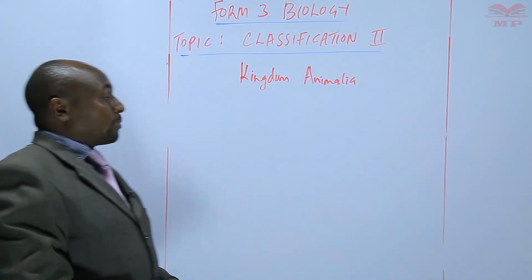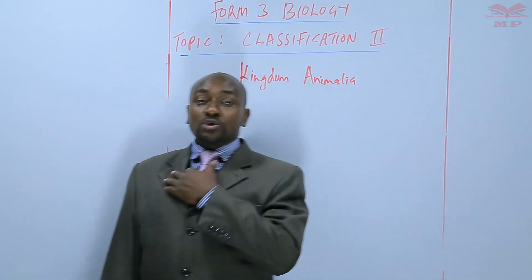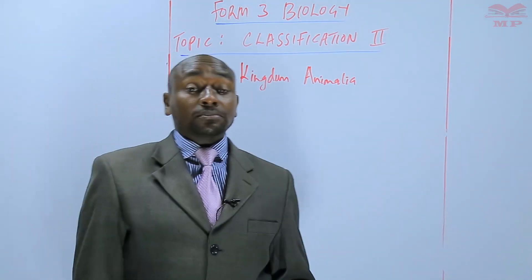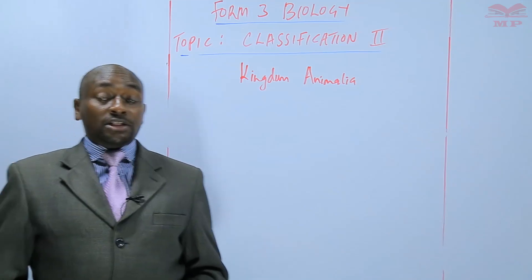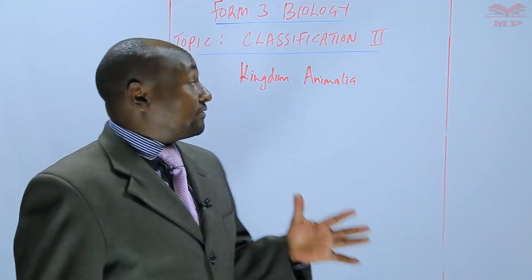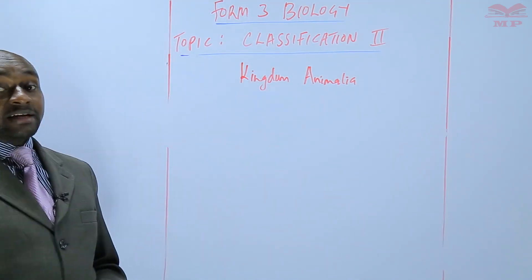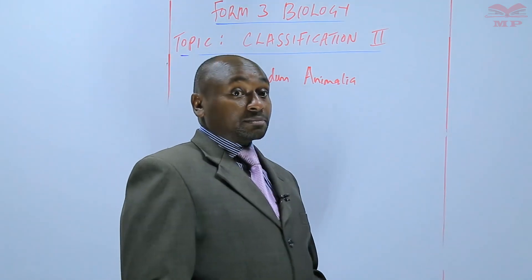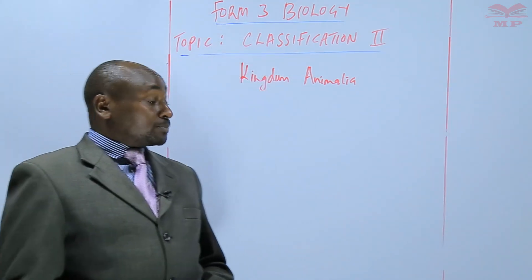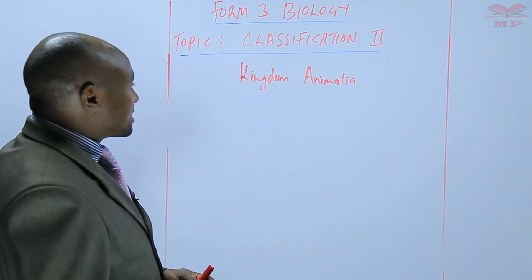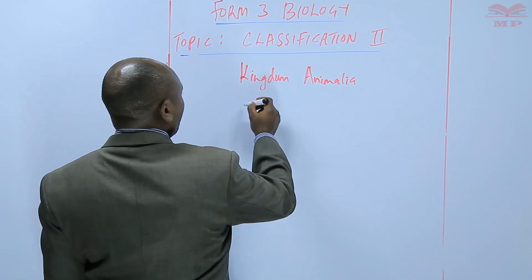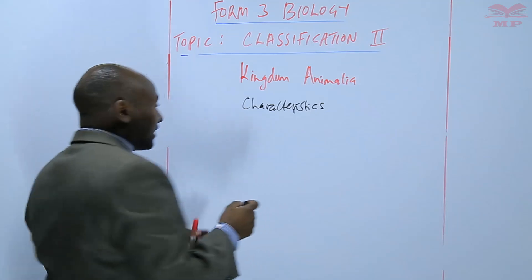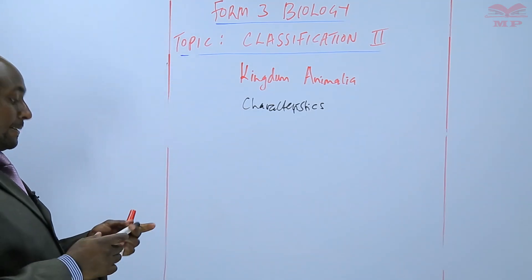Kingdom Animalia is one of the most advanced kingdoms of taxonomy, and in this kingdom we have the different types of animals. First of all, we are going to study the characteristics of Kingdom Animalia.